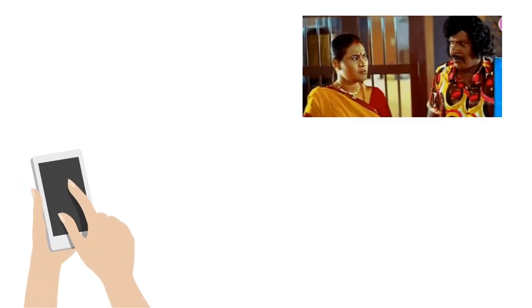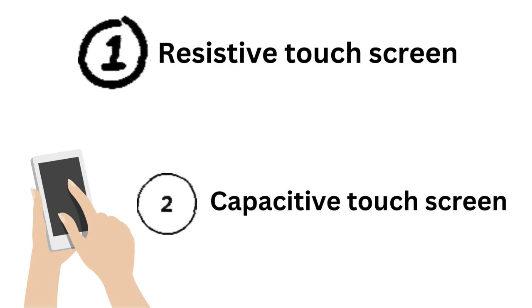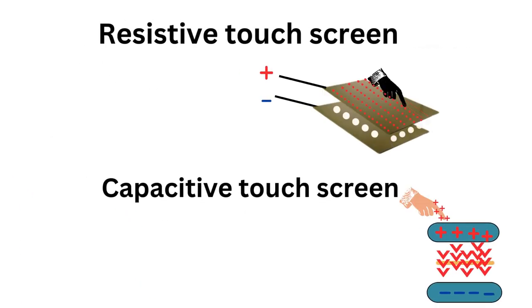There are two types in mobile phones: resistive touchscreen and capacitive touchscreen. The two touchscreens use different technologies.